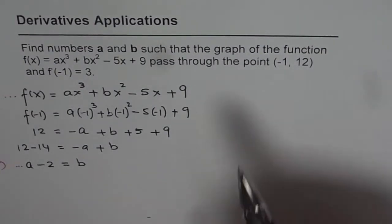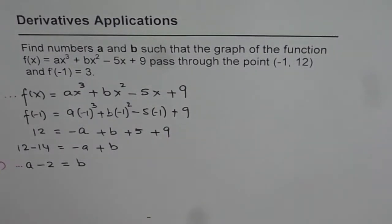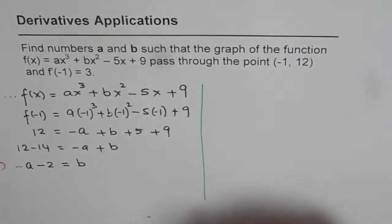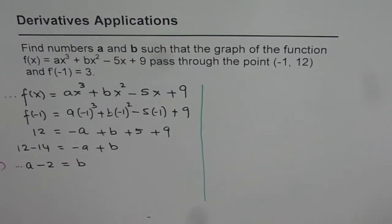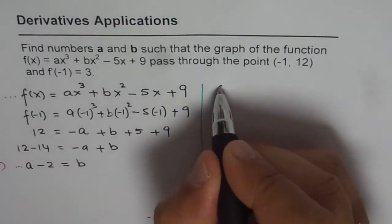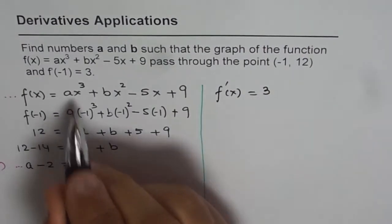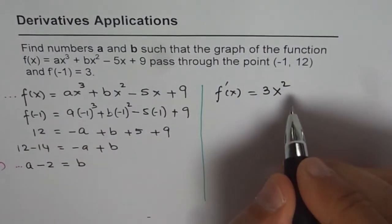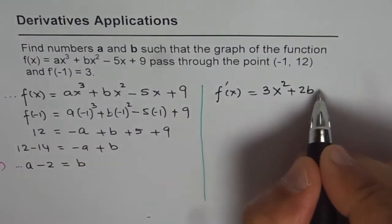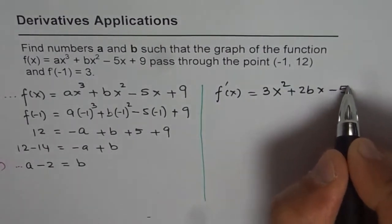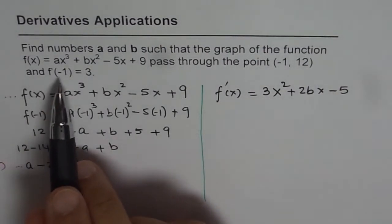Let us use the second equation with the derivative part. Let me do it on the right side. So derivative of this function is f'(x) which equals 3x² + 2bx - 5.